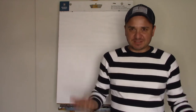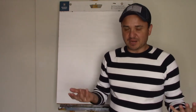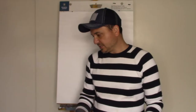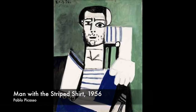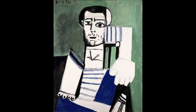We're going to do another Pablo Picasso tutorial. If you've been to this channel before, you know that I'm obsessed with Pablo Picasso. Today we're going to do this one right here. Pablo Picasso, the Spanish artist, painted this painting on September 20th, 1956, titled Man with the Striped Shirt.